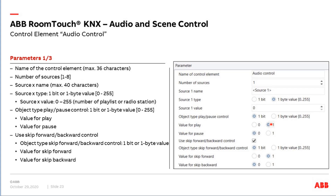Now let's look at the parameters of this audio control element. The first parameter is the name of the control element — for example 'Music' or the name of the room — which is displayed in the RoomTouch for the end user. The number of sources is maximum eight, meaning we can call up to eight different playlists or radio stations. For each source we enter the name, the type (one bit or one byte — recommended is one byte), and the value. If the value is one, we call the first favorite; if the value is five, we call the fifth favorite in our playlist.